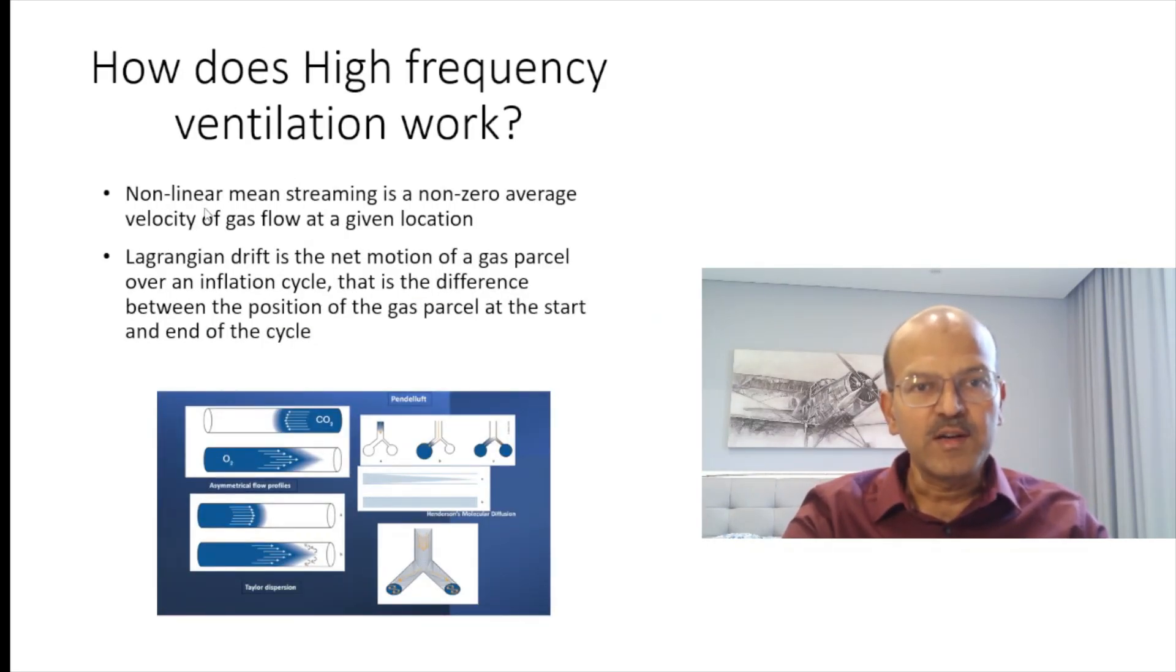Non-linear mean streaming is a non-zero average velocity of gas flow at a given location. Suppose you look at this particular point in the airway, what is the velocity is non-linear mean streaming. Langrangian drift is the net motion of a gas parcel over an inflation cycle. Suppose inflation is starting here and in the center the gas particle moves further away and in the periphery it moves less. So this is Langrangian drift, and according to the level of drift the gas exchange happens to that extent.